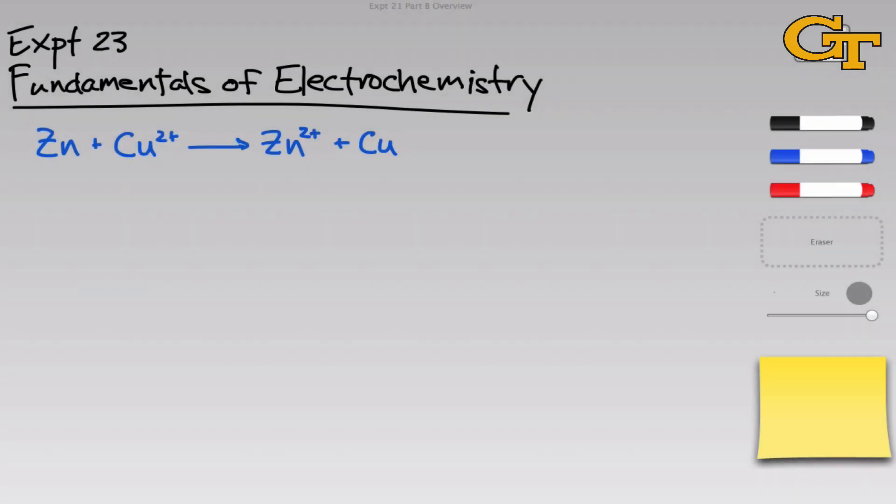To begin discussing part B of this experiment, I want you to consider the redox reaction shown here. One mole of zinc metal reacts with one mole of copper 2+ ions to form one mole of zinc 2+ ions and one mole of copper metal. As we can see by examining the formal charges on either side, this reaction represents the flow of two electrons per atom of zinc, or atom of copper 2+, from the zinc metal to the copper 2+.